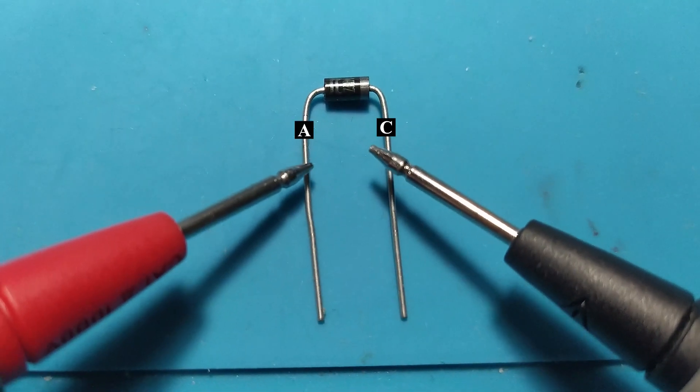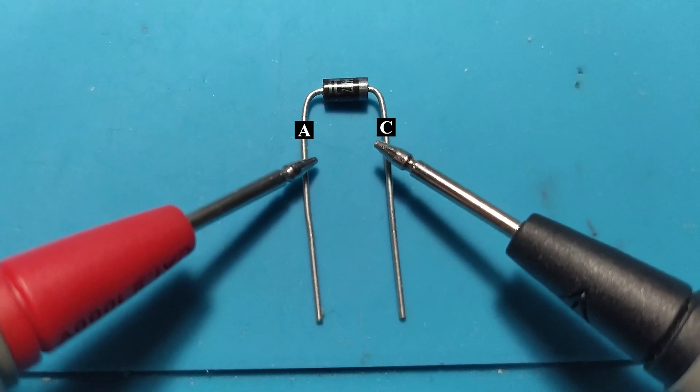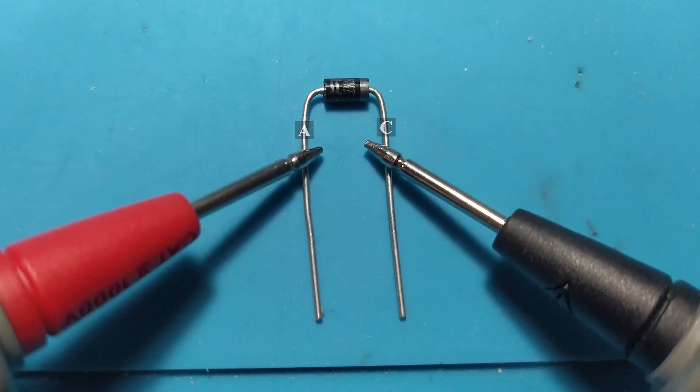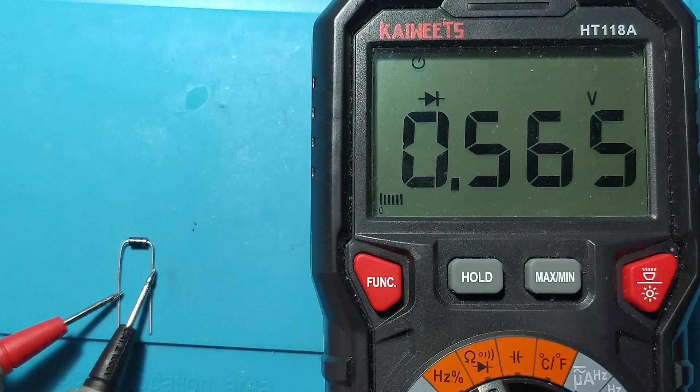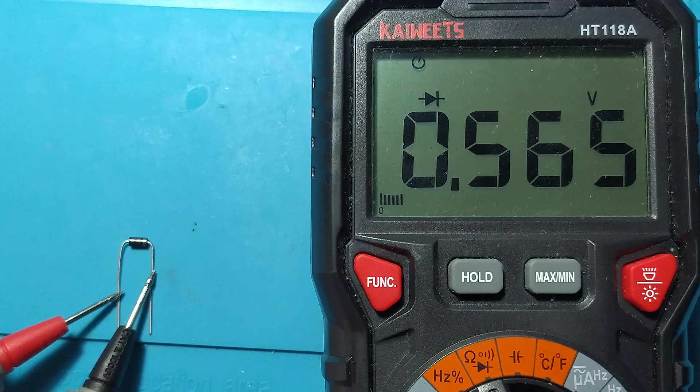With the red probe on the anode and the black probe on the cathode, the rectifier diode will conduct the electric current. The multimeter showing us a voltage drop of about 500 to 600 millivolts.